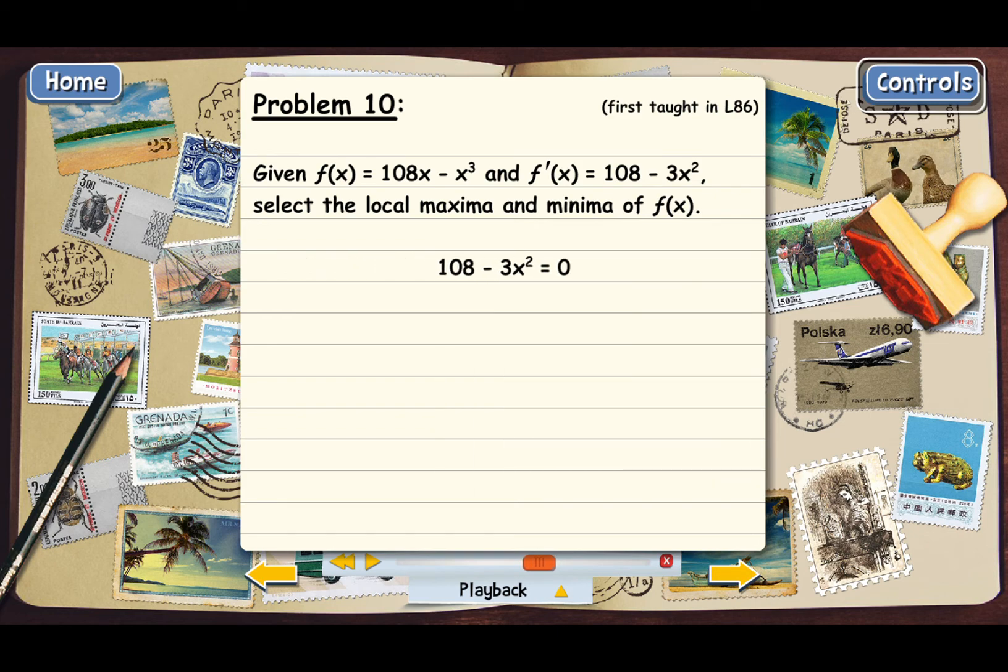The first step in solving this is I'm going to move the -3x² over to the right side, and then I might as well just flip the whole equation around since we're used to having the x term on the left and the number on the right. It doesn't really matter mathematically, but I'm just used to seeing it that way. And then now we need to divide both sides by 3. That gives us x² = 36. And then the last step is to take the square root of both sides. There are two square roots to 36, a positive and a negative, and so that gives us x = 6 and x = -6. These are the x-coordinates of the local max and the local min.